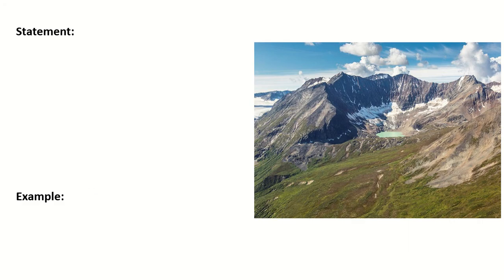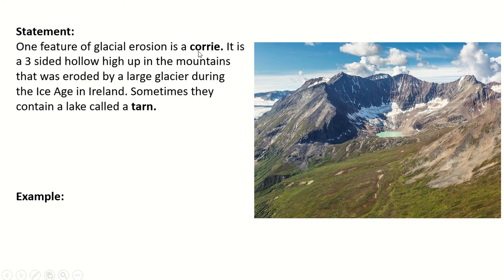To answer this question: your opening statement identifies the feature — 'One feature of glacial erosion I have studied is a corrie.' Then you must give a definition, because the examiner needs to know what a corrie is. So: 'A corrie is a three-sided hollow high up in the mountains that was eroded by a large glacier during the Ice Age. In Ireland, sometimes they contain a lake called a tarn.' That gives a really good description of what a corrie is.